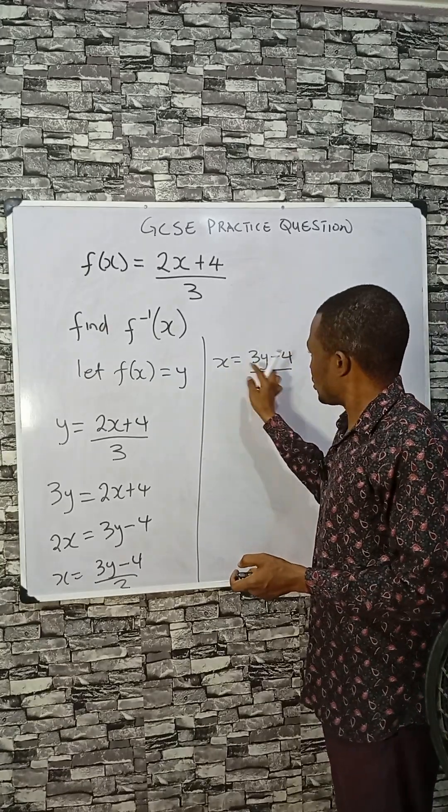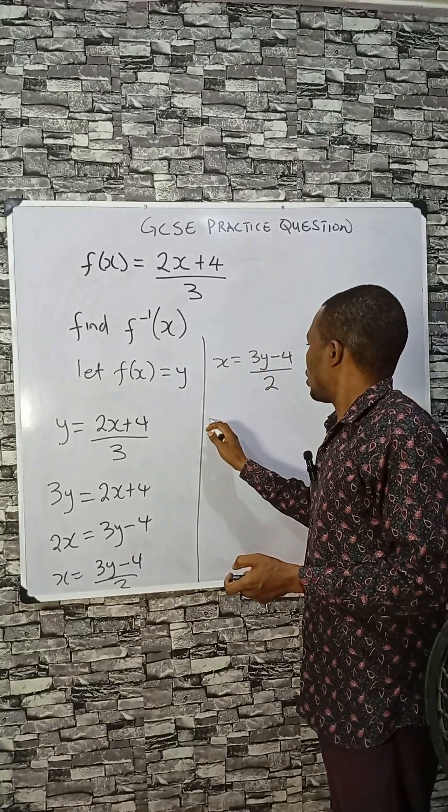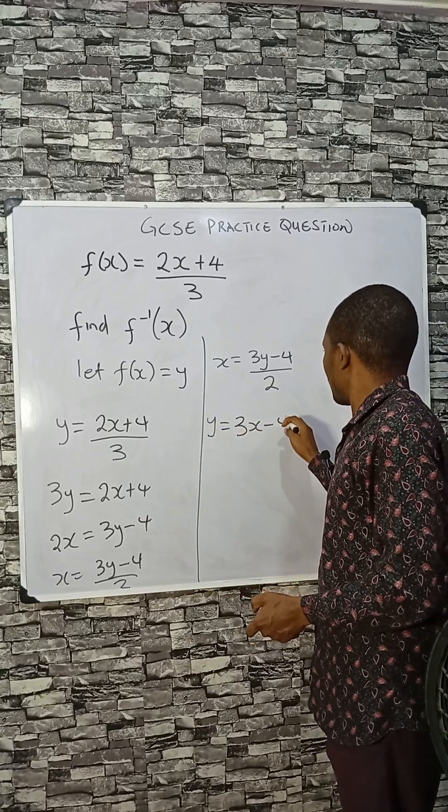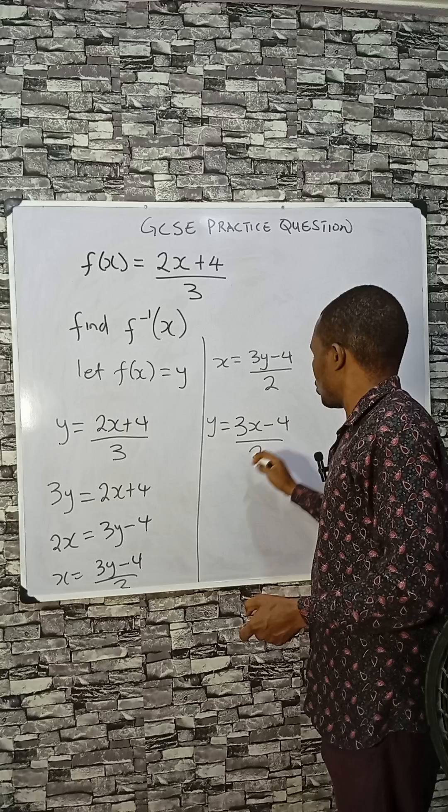Take x back to its place. That would be y equals 3x minus 4 divided by 2. So this is the inverse function.